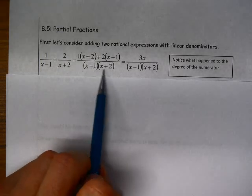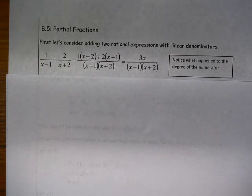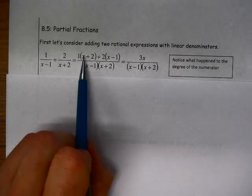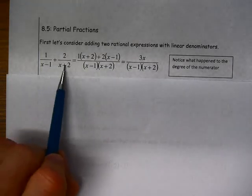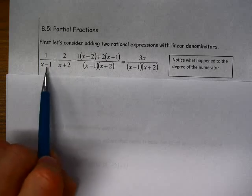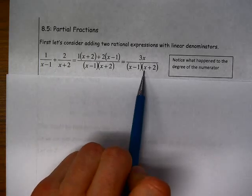When I do that, I have my common denominator. Then I distribute the 1 here and the 2 here. When I do that, I can combine like terms and I'll just end up with 3x. So I take these two rational expressions, both with linear denominators, and I get this result.